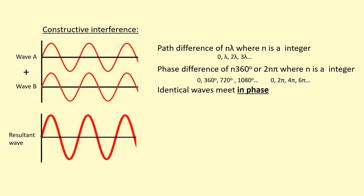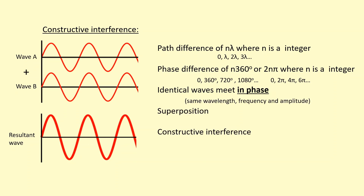When two identical waves meet in phase — by identical I mean they have the same wavelength, same frequency, and amplitude — they're going to superpose and the superposition leads to constructive interference, producing a maximum. For example, if this was sound, we'd hear a very loud sound because they're adding together to make a louder sound.